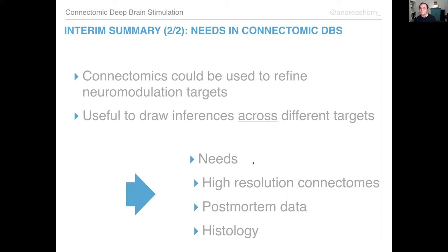In summary: connectomics can be used to refine neuromodulation targets and draw inferences across different targets — we can train a connectomic model on one target to predict another. We need high-resolution connectomes; Carla Miller's group pushing a 7T normative connectome resource is very exciting. We also need more post-mortem data and histology, and techniques like Warp Drive to refine the fit between atlases and patient data. Thank you.